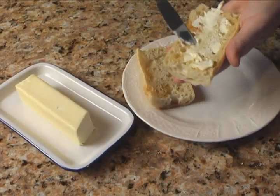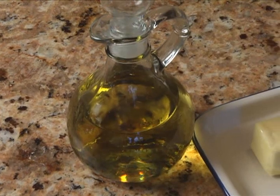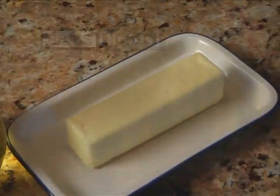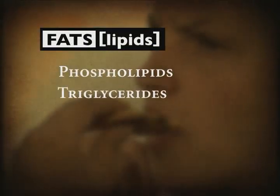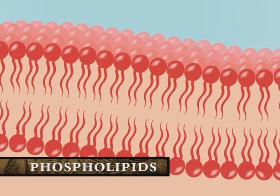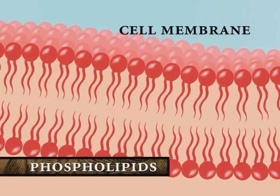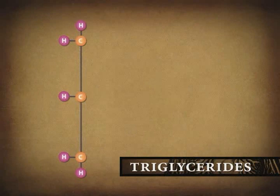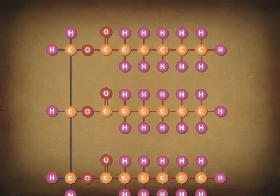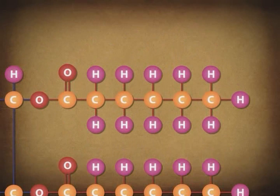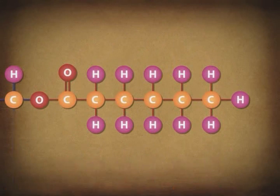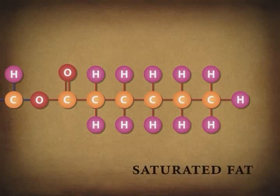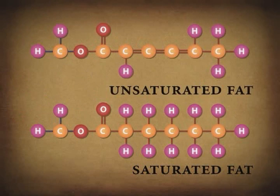Fats, also called lipids, are the third type of major nutrient. Typically, lipids are referred to as oils if they are liquid at room temperature and fats if they are solid at room temperature. There are three kinds: phospholipids, triglycerides, and steroids. Phospholipids are mostly tied up in cell membranes and don't play a major part in energy metabolism. Triglycerides are a major energy source. They are composed of a three-carbon glycerol molecule with three fatty acids attached. Fatty acids are chains of carbon atoms. Attached to the carbons are hydrogen atoms. If all the possible hydrogen atoms are attached, the fatty acid is called a saturated fat. If any of the hydrogen atoms are missing, it's called an unsaturated fat.